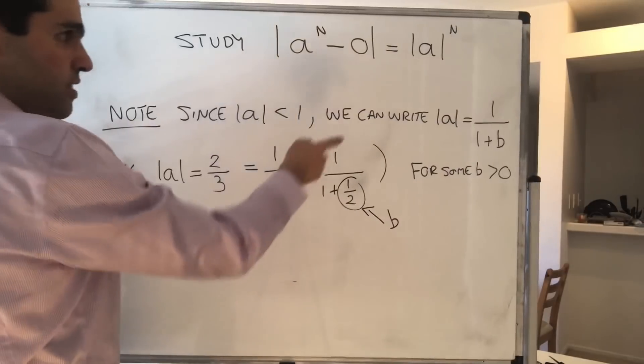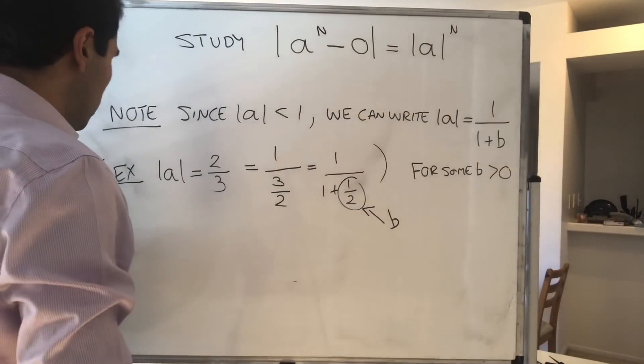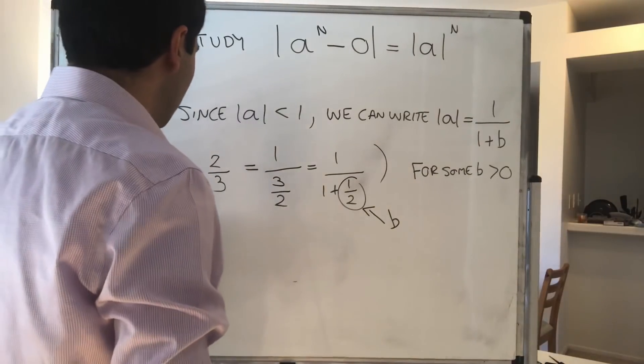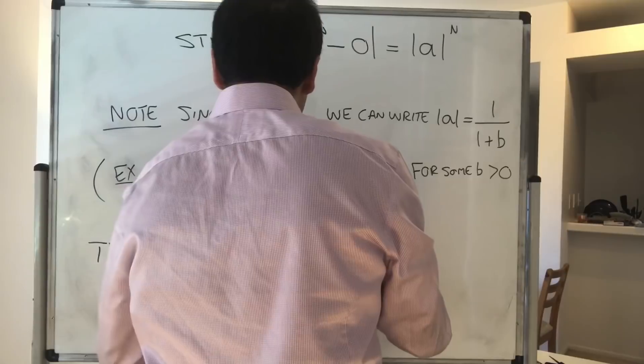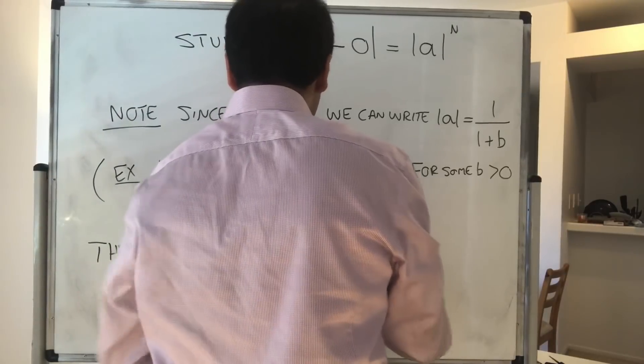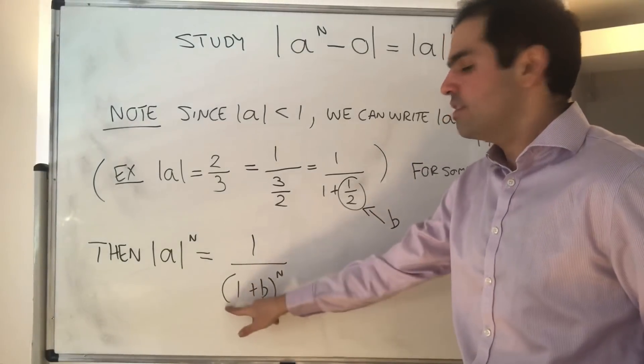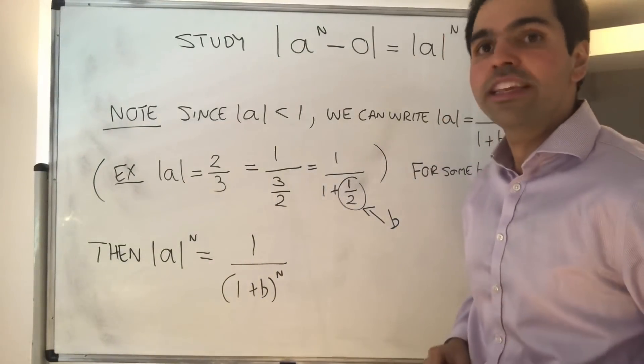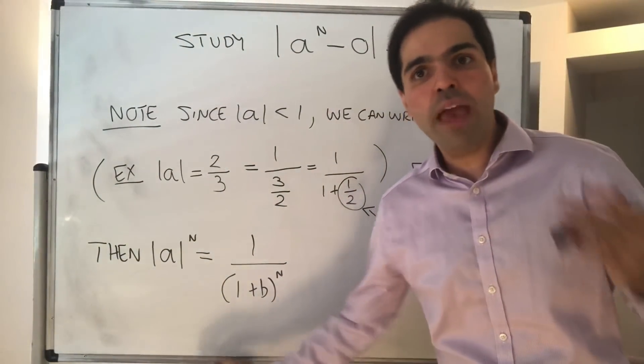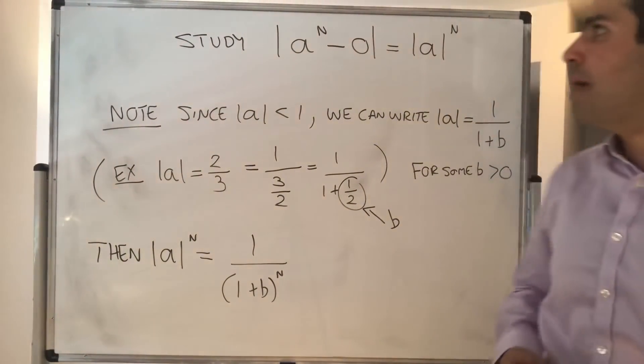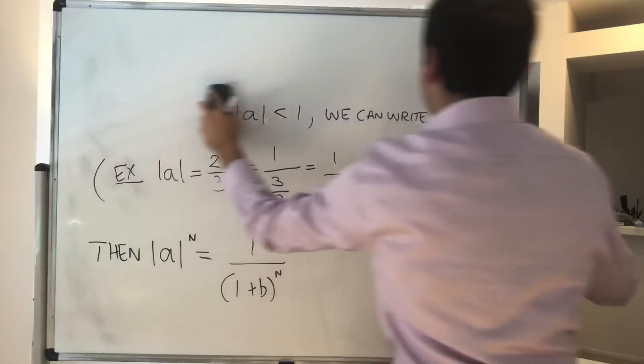Now, why is that useful? Because notice then a to the n, so the stuff we want to show is small, just becomes one over one plus b to the n. So it looks like we would have to expand this thing one plus b to the n. And for this, we have to use a result that you may or may not know, called the binomial theorem. And let me motivate this.